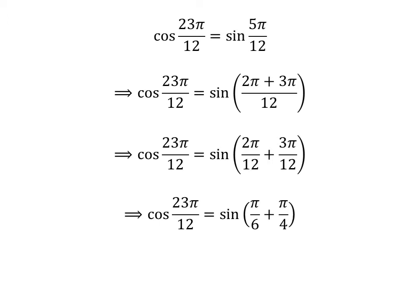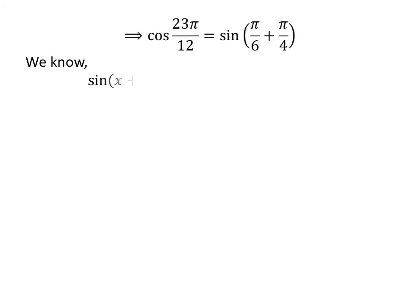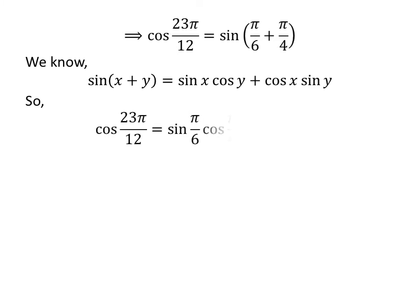So, cosine of 23 times pi upon 12 is equal to sine of pi upon 6 plus pi upon 4. Applying the sine addition formula, cosine of 23 times pi upon 12 is equal to sine of pi upon 6 times cosine of pi upon 4 plus cosine of pi upon 6 times sine of pi upon 4.